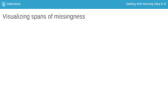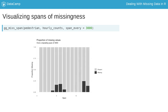gg-miss-span is the visual analog of miss-vars-span. This calculates the number of missings in a given span — for example, for every 3,000 rows — and displays the amount of missing values in each span in a filled bar plot.